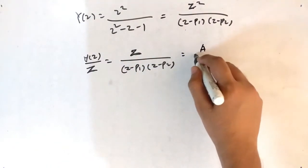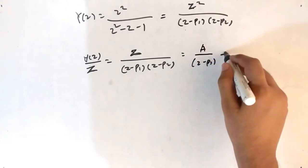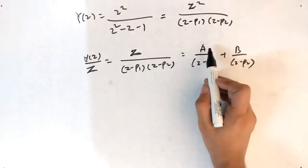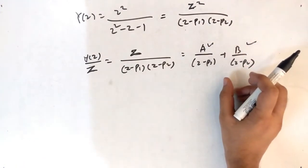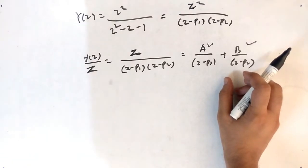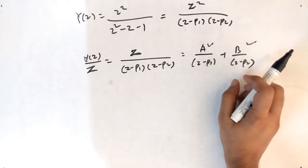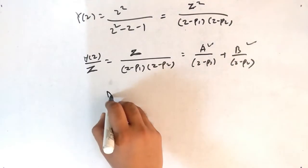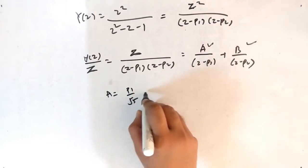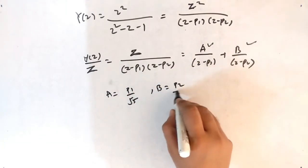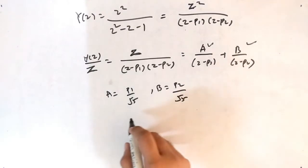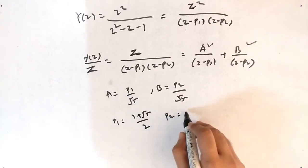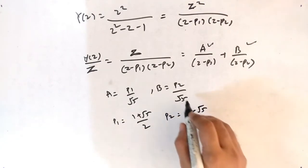Apply the partial fraction: Y(Z)/Z = A/(Z - P1) + B/(Z - P2). Solve for A and B. You can find the poles P1 and P2 by solving Z² - Z - 1 = 0, giving P1 = (1 + √5)/2 and P2 = (1 - √5)/2. The corresponding residues are A = P1/√5 and B = P2/√5.